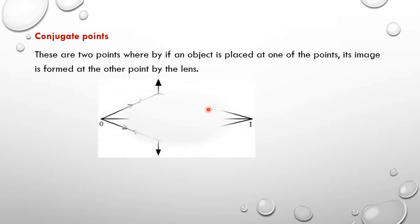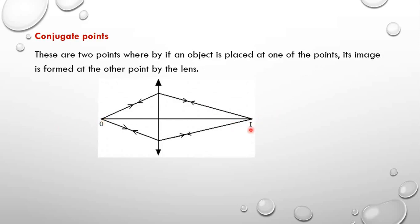Let's begin by looking at the conjugate points. These are two points whereby if an object is placed at one of the points, its image is formed at the other point by the lens. For example, if I place the object at O, the image is formed at I, and when I place the object at I, the image is formed at O. So these two points O and I become conjugate points.